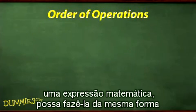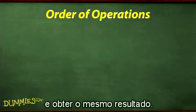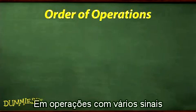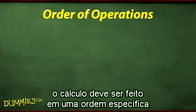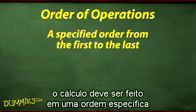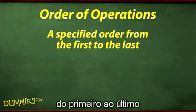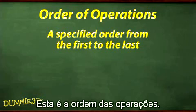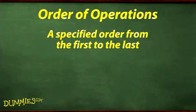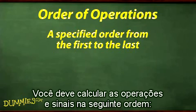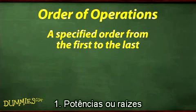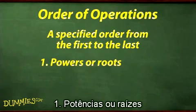Mathematicians designed rules so that anyone reading a mathematical expression could do it in the same way and get the same answer. In the case of multiple signs and operations, working out the problems needs to be done in a specified order from first to last. This is the order of operations. You must work out operations and signs in the following order: first, powers or roots.